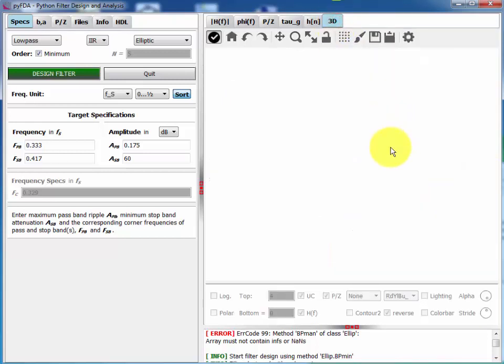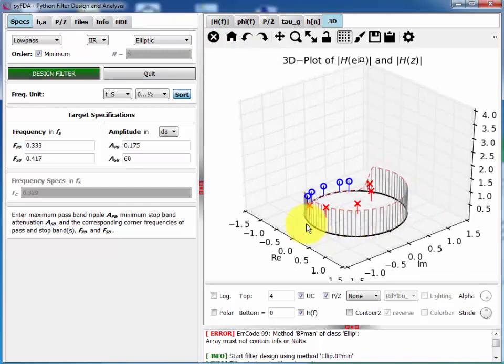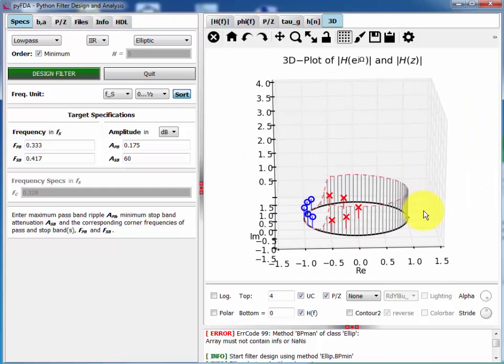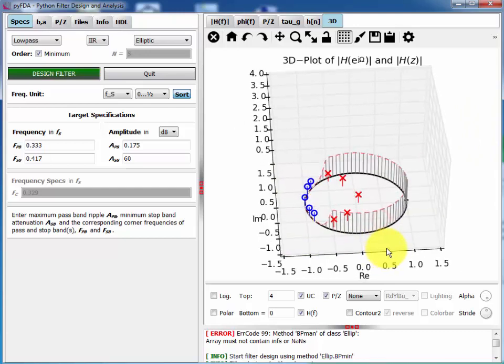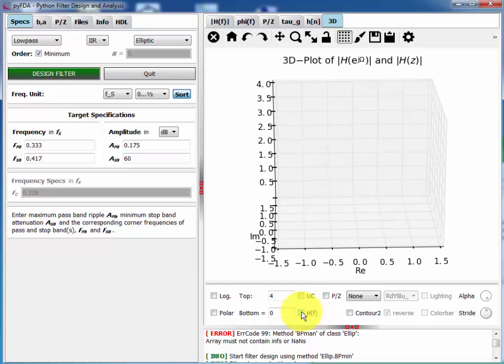The last tab here is 3D. This is disabled by default because this may take some time depending on the display option you've selected here. So I re-enable this. This is the default that just shows you the zeros and the poles in a 3D view. And this is your frequency magnitude response along the unity circle. You can disable the unity circle or the poles and zeros or even the magnitude response until nothing is left.